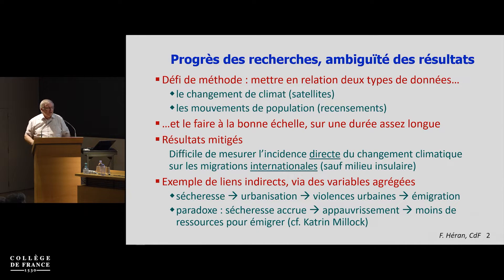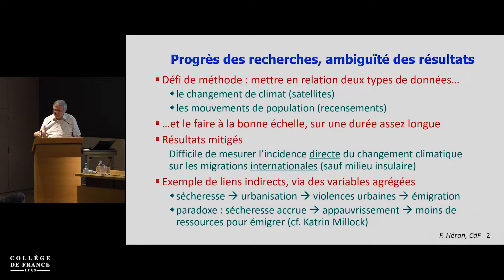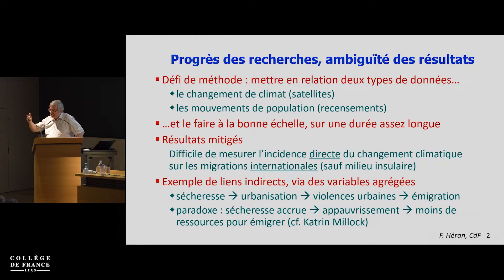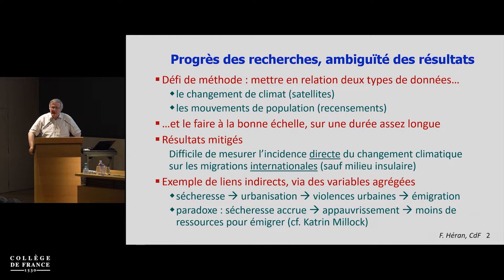it's not true that the poorer a country is, the more migration there is. It is a hump shape — the correlation. The aspiration to migrate is strong in a lot of countries. Even in France, 15% or more of the French population, when you ask them would you like to live in another country on a permanent basis, say yes. So the aspiration is not sufficient. You need some resources to migrate — a minimum of resources.